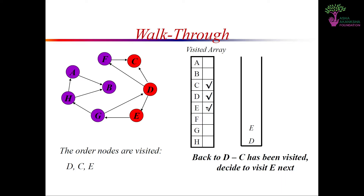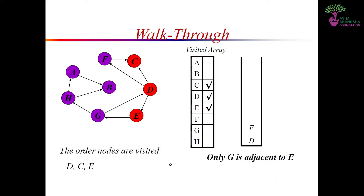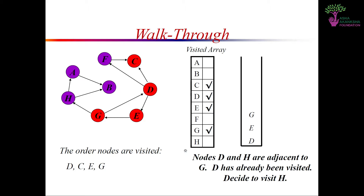We start at D. We mark the visited array of D as true — shown as red in color, ticked in the visited array. In the stack, we also put D. We have visited D. In the left-hand corner, we are showing the order in which we are visiting all nodes. So we have visited D just now.